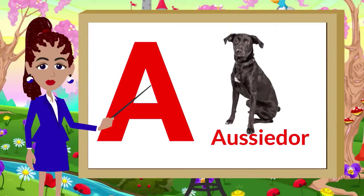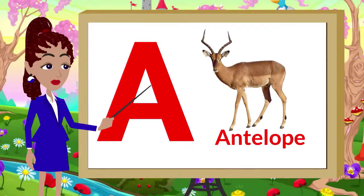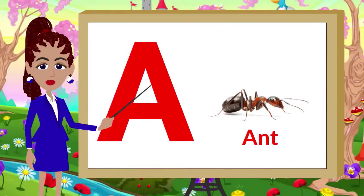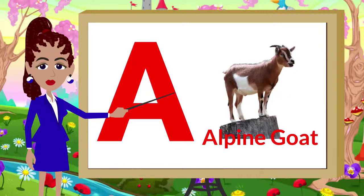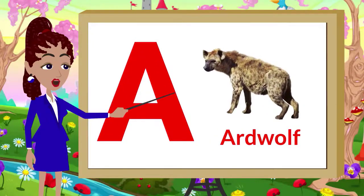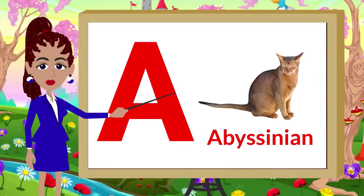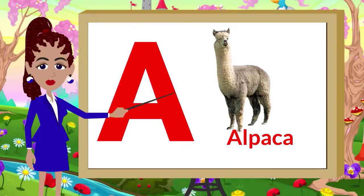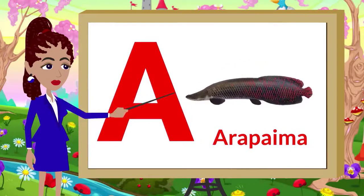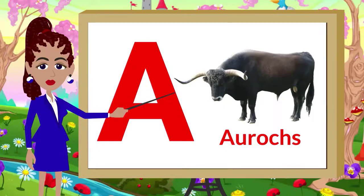A for Armadillo. A for Antelope. A for Ant. A for Alpine Goat. A for Albatross. A for Avisian. A for Alpaca. A for Anaconda. A for Alprima. A for Arcos.